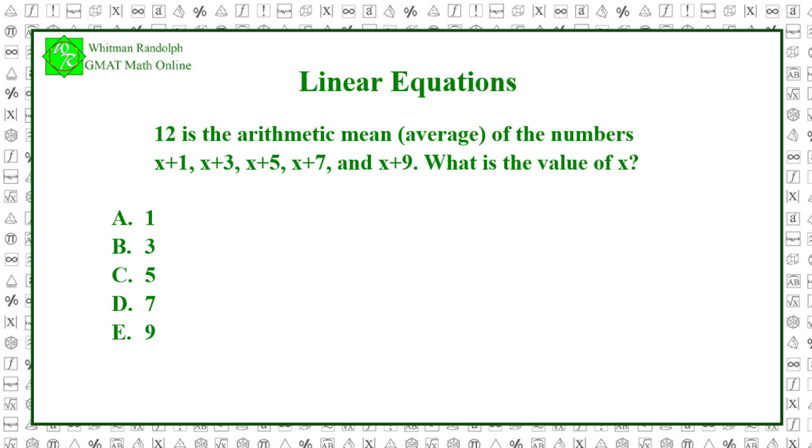To get the average of five numbers, we add up the numbers and divide by five. Since the average is 12, this gives us an equation. The quantity x plus 1 plus x plus 3 plus x plus 5 plus x plus 7 plus x plus 9 divided by 5 equals 12. Combining the values in the parentheses, we get 5x plus 25 over 5 equals 12.